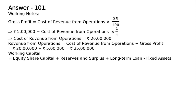Continuing with the working capital calculation: working capital equals current assets minus current liabilities. However, working capital is not directly given. Hence, from the total of the liability side, if we deduct fixed assets, we can get working capital — that is, share capital plus reserves and surplus plus long-term loans minus fixed assets. Current liabilities are not considered, and it is assumed there were no investments.